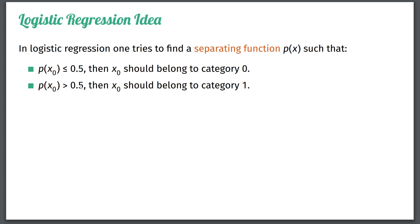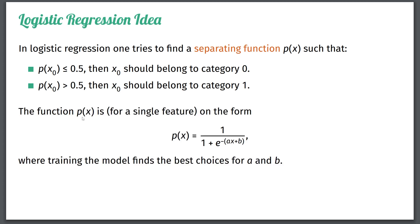And then you might say, yeah, so far so good. But what really is this separating function? Well, specifically for logistic regression, and just for simplification, if you only have a single feature, then this function is on the following form here. So you can see, it's 1 over 1 plus e to the minus, and then parentheses ax plus b, where the training of this logistic regression model finds the best choices for a and b.